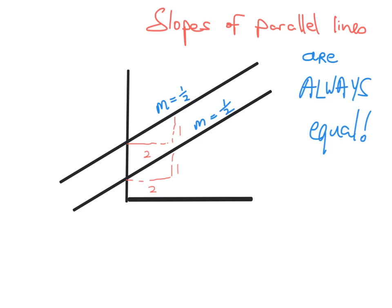You might get a question where you're given a point on a line and asked to find its equation even though you don't know its slope — but you do know the slope of a parallel line. You can simply say: if this one has slope a half, then this one must also be a half, since the two lines are parallel.